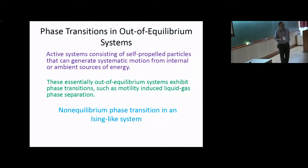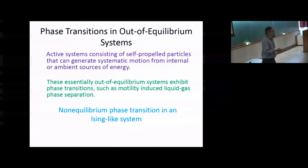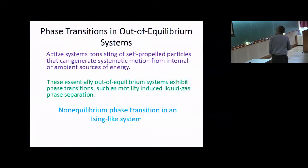Our interest in this actually came from our work on what is known as active systems. Active systems consisting of self-propelled particles which have their own source of energy and so they can generate systematic motion from internal or ambient sources of energy. These essentially out-of-equilibrium systems exhibit phase transitions, such as motility induced liquid-gas phase separation. One then wants to understand how the characteristics of an Ising-like phase transition are changed when one introduces some aspects of non-equilibrium behavior in such a system.